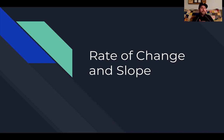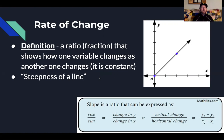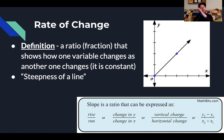This week we'll be looking at a review of what slope is, the different types of slope, and how to calculate that using the slope formula. So, rate of change and slope — the definition: rate of change is really a ratio or a fraction that shows how one variable changes as another one changes. As this changes, this also changes, and it's a constant change.